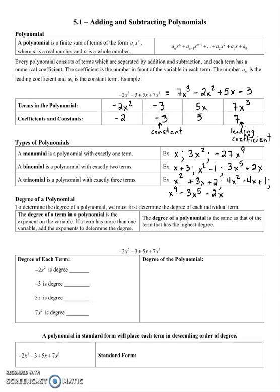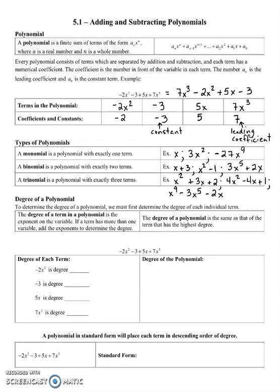Now we need to talk about the degree of a polynomial. To determine the degree of a polynomial, we have to determine the degree of each individual term. The degree of a term is just the exponent. If a term has more than one variable, we add the exponents of all the variables to determine the degree. The degree of the whole polynomial is the same as that of the term with the highest degree.